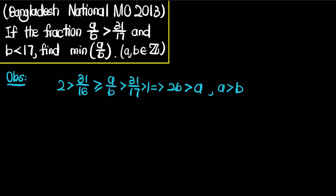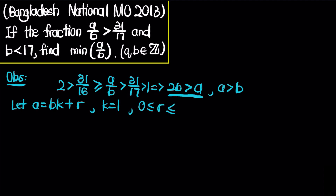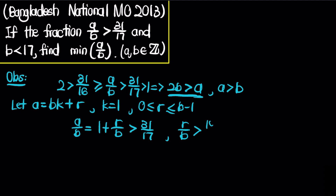What we can do is apply the division algorithm on a and b. We let a equal b times k plus r, where r is the remainder. Because of the bounds we established, k must equal 1, and r is situated between 0 and b minus 1. Therefore, a over b equals 1 plus r over b, and this is bigger than 31 over 17. Subtracting 1 from both sides, we get that r over b is bigger than 14 over 17.